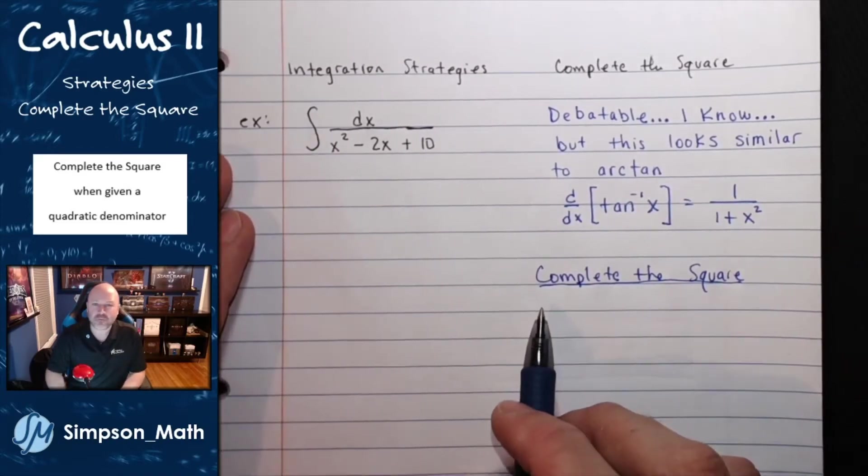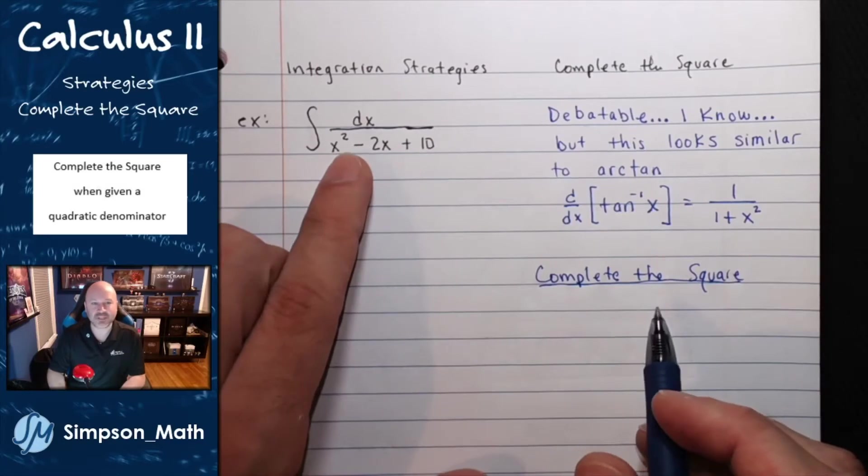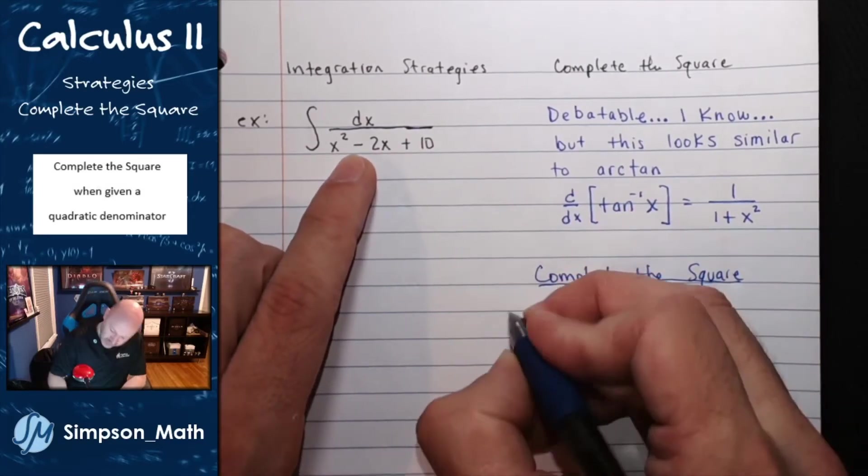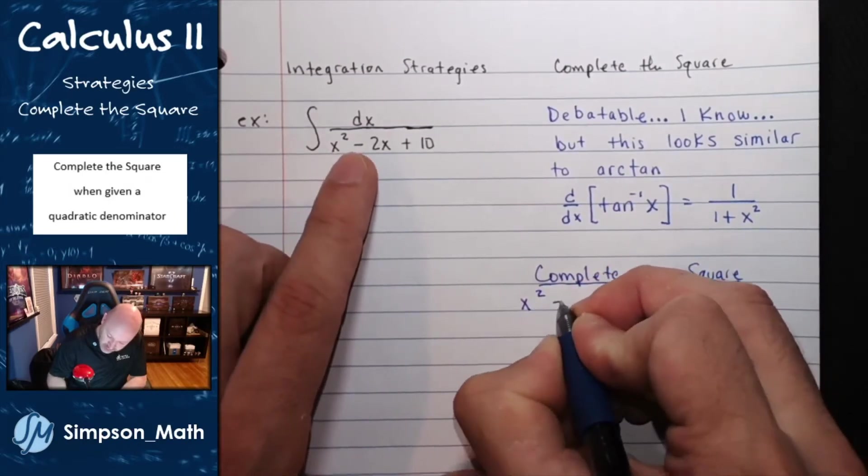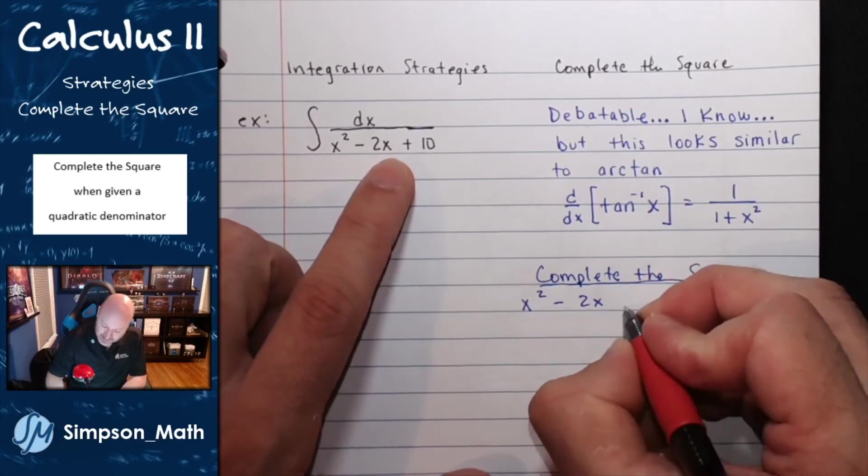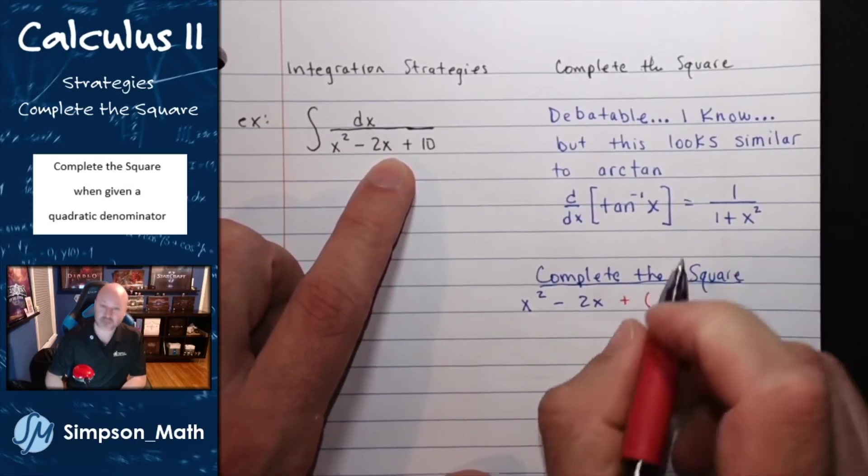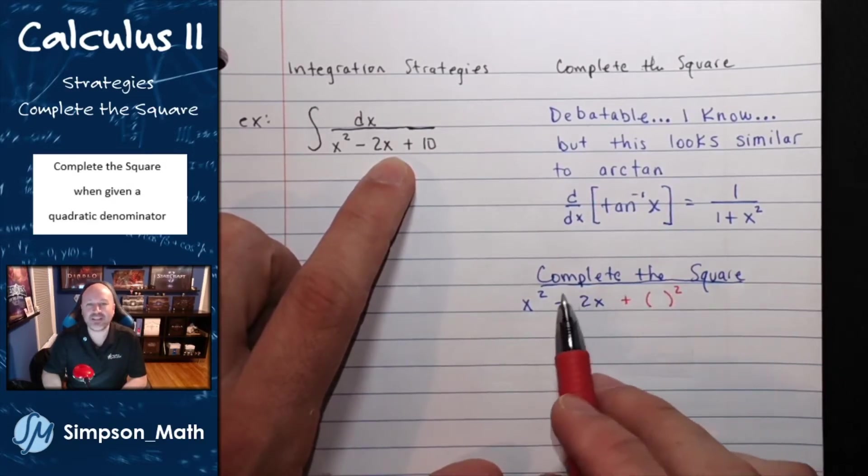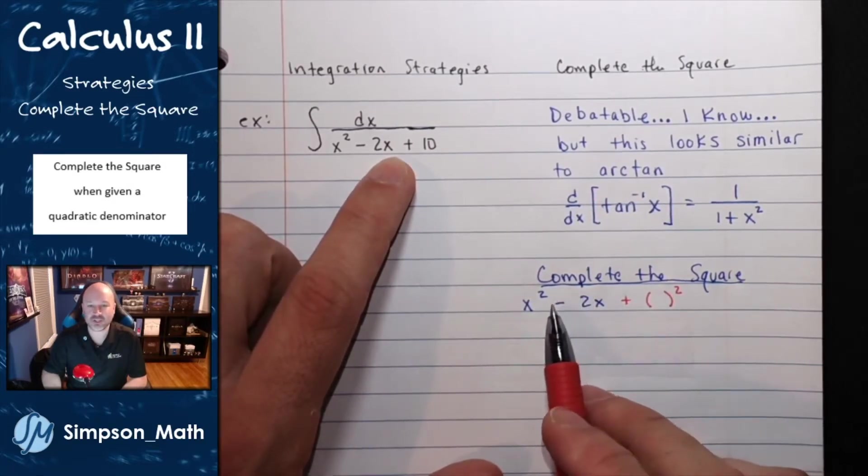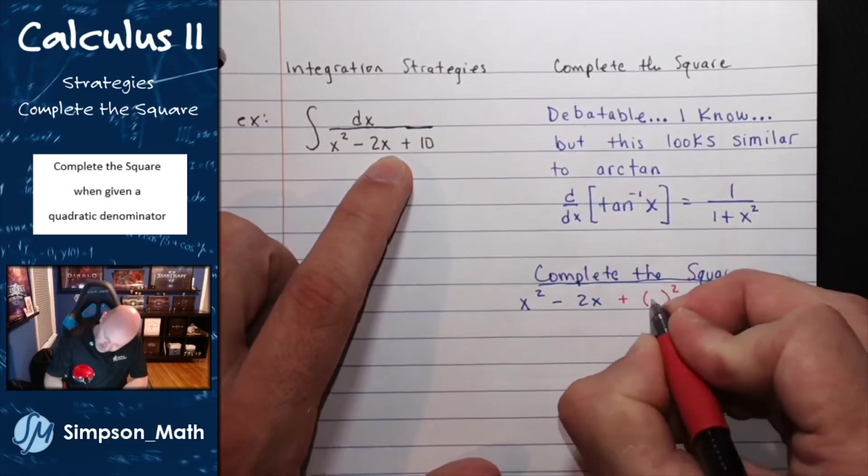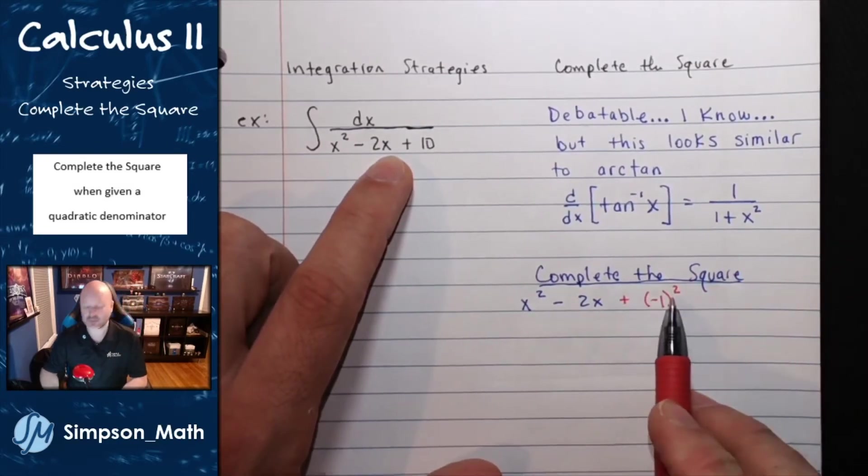Alright, so to complete the square, hopefully you remember, you take your quadratic, which is usually in the form of a trinomial, and you're going to rewrite your terms with the variable, and then you're going to add a number squared. And that number is half of the linear constant. So the coefficient on the linear term is negative 2. Half of negative 2 is negative 1. I'm going to add negative 1 squared.